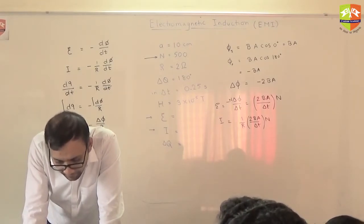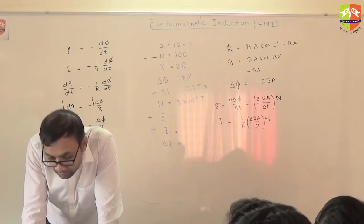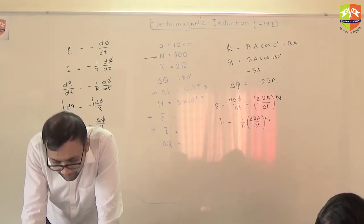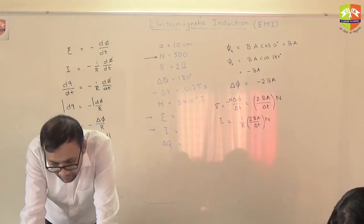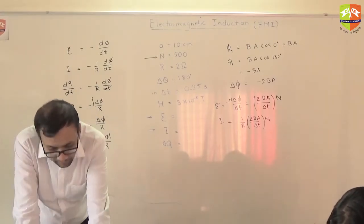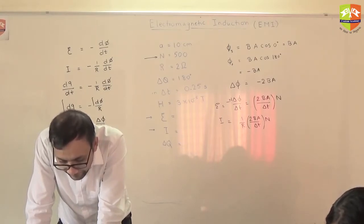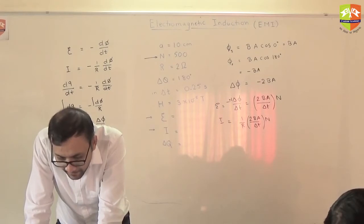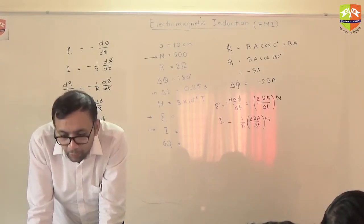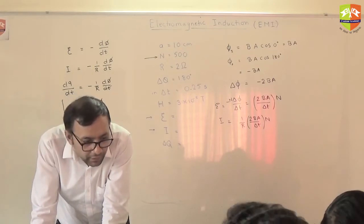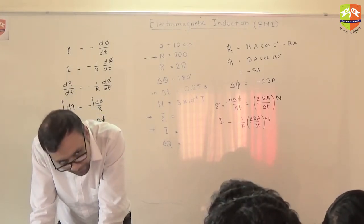The answer is 3.8 into 10 to minus 3. The flux is 3π into 10 to the minus 7, so 2 times that into 500 divided by 0.25. There seems to be a calculation error. You got 3.10 — because 1.2π is 3.10 — but then you're unable to proceed. After getting 1.2π, you're not able to multiply 1.2 with π. Why?